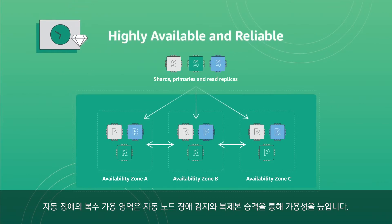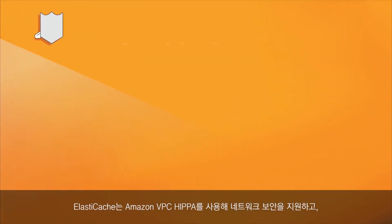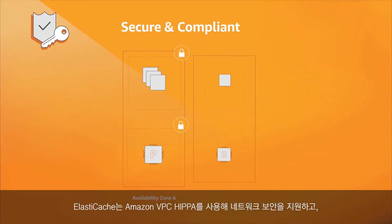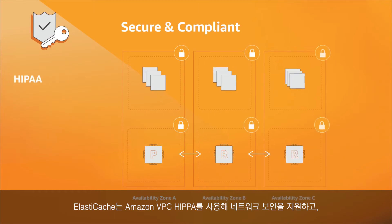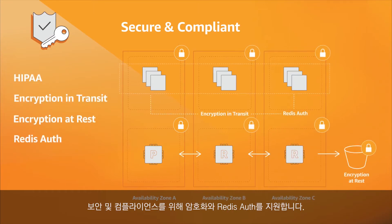Multi-availability zone and auto-failover enhances availability with automatic node failure detection and replica promotion. ElastiCache supports network security using Amazon VPC, is HIPAA eligible, and supports encryption and Redis auth for security and compliance.